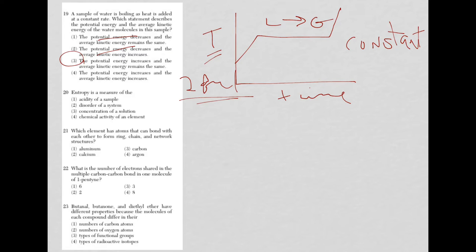There it is, choice three. We're dealing with facts here, and realizing that we have the definition for temperature that ties directly in with kinetic energy. Question 20: Entropy is a measure of, straight definition, isn't it? We're talking disorder of a system. Just got to know it. That's entropy.